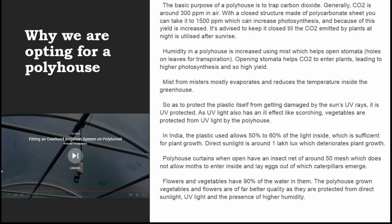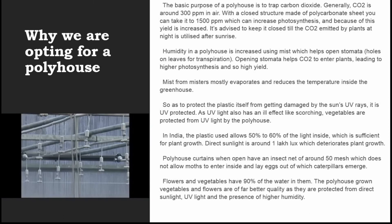Flowers and vegetables have 90% of their content as water. Poly house grown vegetables and flowers are of far better quality as they are protected from direct sunlight, UV light, and benefit from higher humidity. We will end this session here and learn about the principle and working of poly house in our next session. I hope this session has been very informative. Until next time, goodbye and have a nice day.